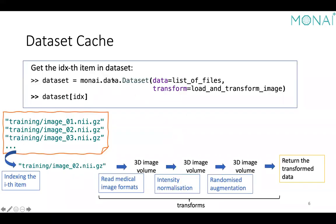When we construct this dataset and call the indexing method, it performs these steps: finding the corresponding file names according to the index, parsing the specific medical imaging format, applying intensity normalization transforms and additional random augmentation for training, and returning the data ready for the model. These are the basic concepts of the dataset — if you are familiar with torchvision, we are essentially following the same PyTorch idea.